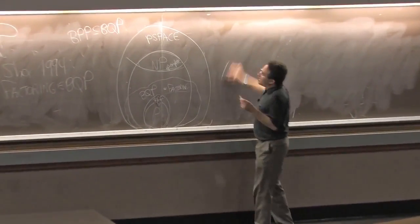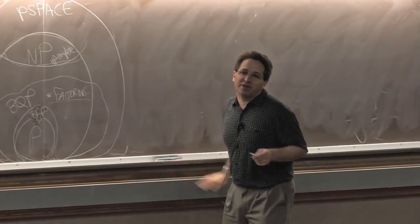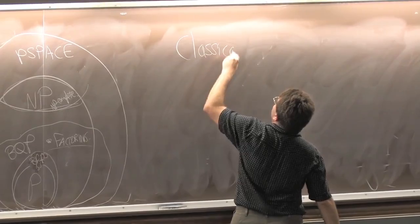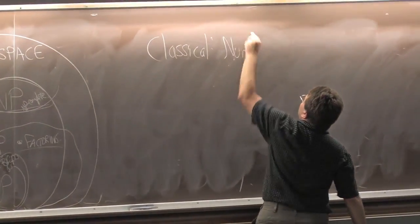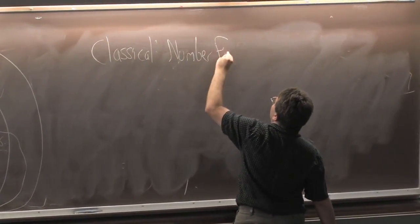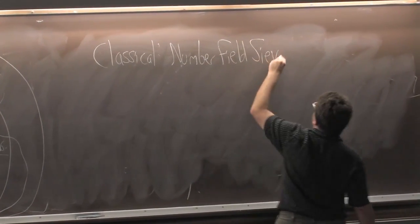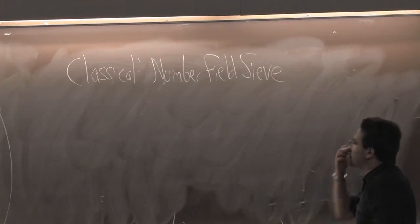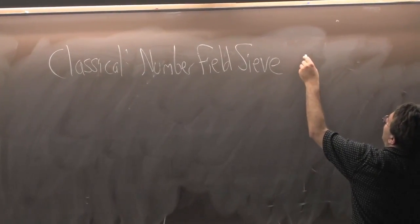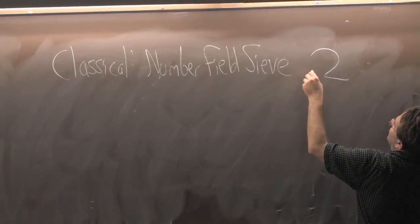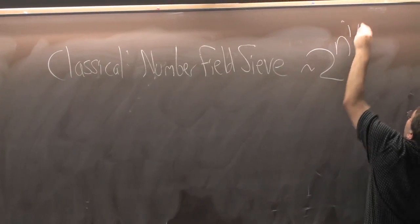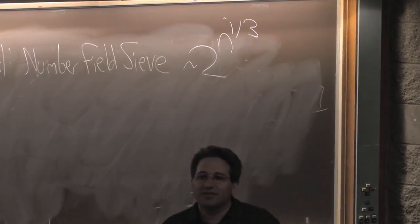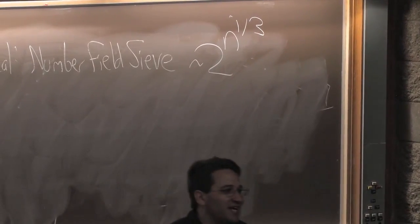So first of all, what is the best known classical algorithm for factoring? The best known classical algorithm is called the number field sieve. It's actually a lot better than just a naive brute force search, and it's able to factor an n-digit number in something like exponential in cube root of n steps, which is much better than exponential in n steps.